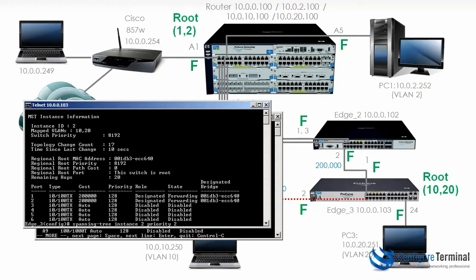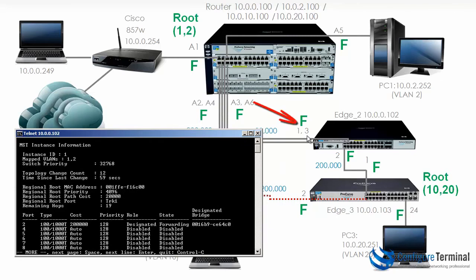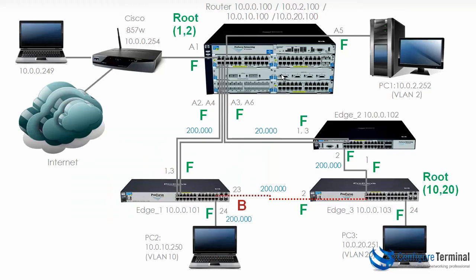On edge 2, typing 'show spanning-tree instance 1' shows that this switch is not the root. Its root port is TRK1 — it's using that port to get to the root bridge, which in this case is the 5406 switch acting as our router. That makes sense because the 5406 is the root for instance 1, and from edge 2's point of view, TRK1 is the best path to the root bridge.